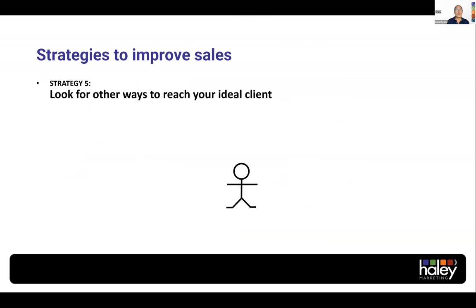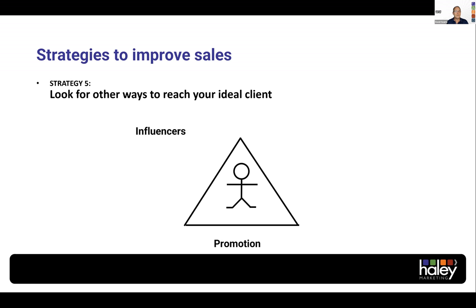Strategy number five: look for other ways to reach your ideal clients. Think about that person you are most trying to sell to — an HR manager, a CEO, a plant manager, a general manager, a CIO, a director of nursing, whoever that is. How do you reach that person today? You call, you email, you drop by, you send letters. All of that stuff you're doing today is promotion — we're promoting our business to that person. But think of that person as being in the center of a triangle. The left leg of that triangle are people who already know the individual in the middle, and sometimes it's faster to market to the influencer and get referred in than it is to market directly to the person in the middle.